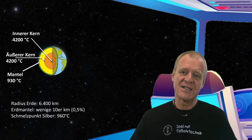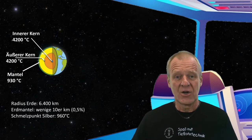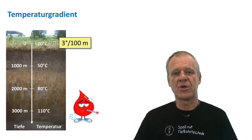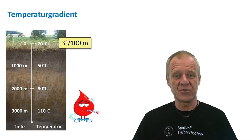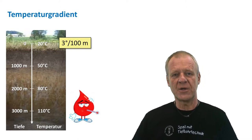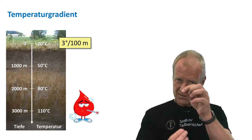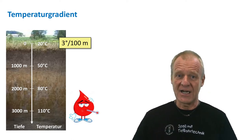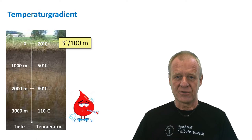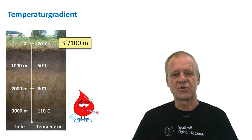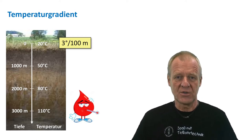For every 100 meters we move from the surface into the Earth, it gets about 3 degrees warmer. So at a depth of 3 kilometers, we should therefore find a temperature of 100 degrees Celsius, which in principle should be enough to produce boiling water. So geothermal energy deals with getting this heat out of the Earth.